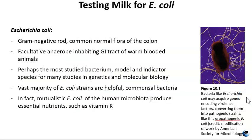The second main part of the semester project involves testing milk for E. coli. Some key facts about Escherichia coli: it is a gram-negative rod or bacilli, a common normal flora of humans, a facultative anaerobe, and it inhabits the gastrointestinal tract of warm-blooded animals. E. coli is perhaps the most studied bacterium — a model species and indicator species for many studies. The vast majority of E. coli strains are helpful commensal bacteria. In fact, mutualistic E. coli of our microbiota produce essential nutrients like vitamin K.